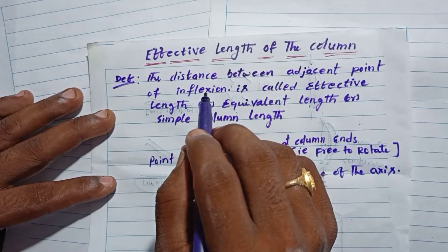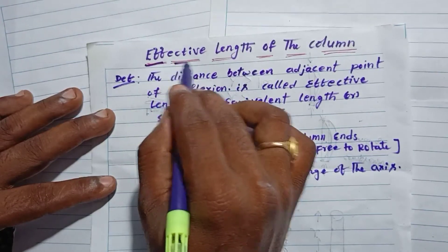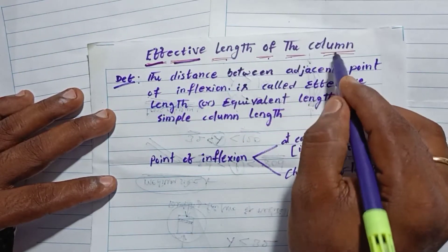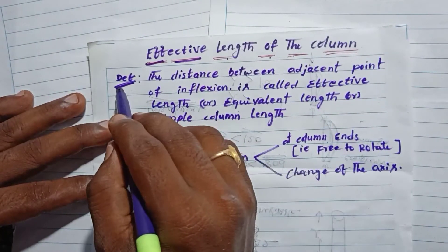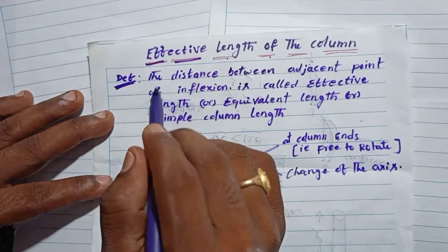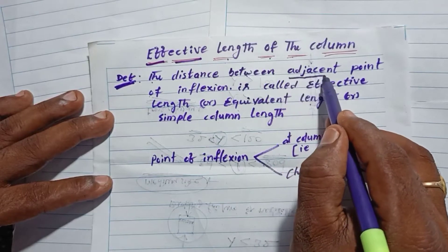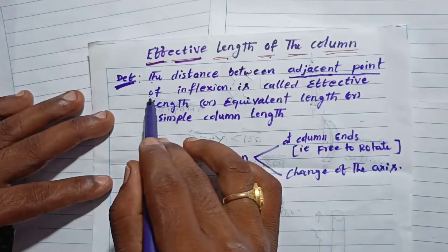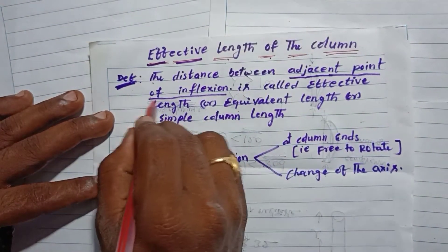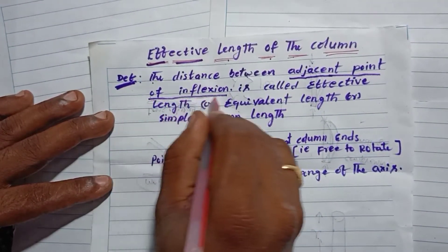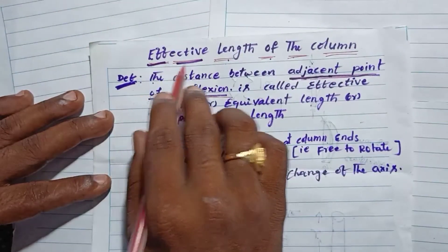In the present video, we will cover columns and struts. The effective length of the column is defined as the distance between adjacent points of inflection. In the column, there are inflection points, and the distance between those inflection points is the effective length.